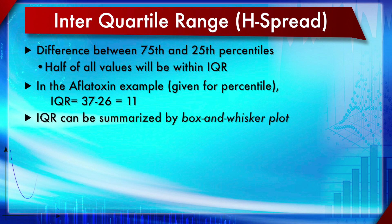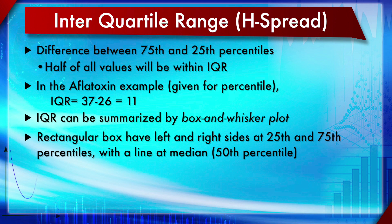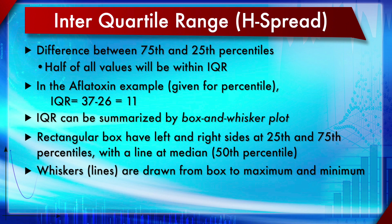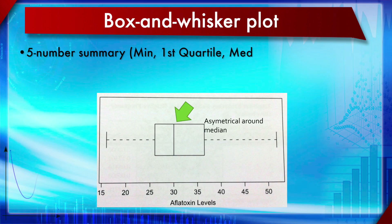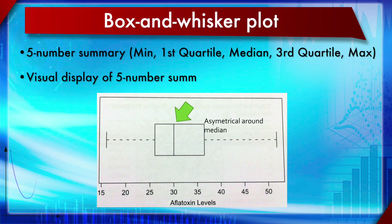IQR can be visually summarized by a box and whisker plot. The plot has a rectangular box in the center: its left side is at the 25th percentile, its right side is at the 75th percentile, and a line inside intersects at the median. Whiskers extend from both sides to the minimum and maximum. The box and whisker plot is the five-number summary — minimum, first quartile, median, third quartile, and maximum — represented visually.